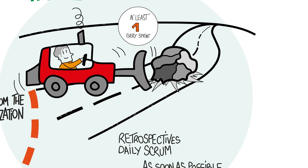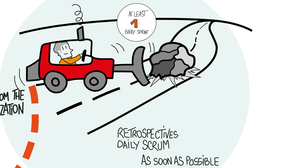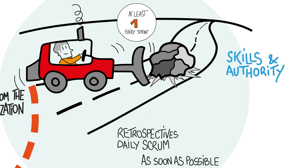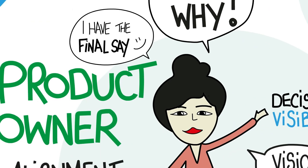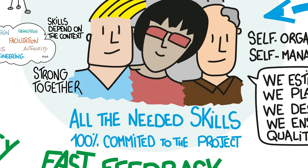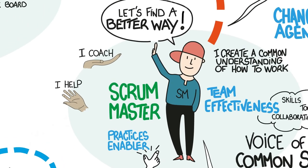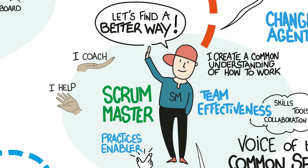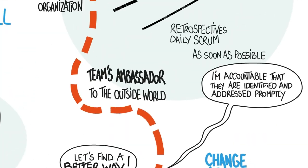The first impediment that most Scrum Masters face is whether the team even has the necessary skills and authority. Can the product owner make decisions about the product? Are the developers dedicated 100%, and do they have all the skills needed to produce a working increment every sprint? A Scrum Master should have time and permission to work proactively on impediments, especially those originating outside the team.